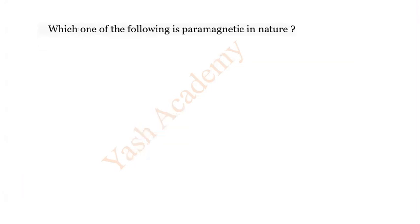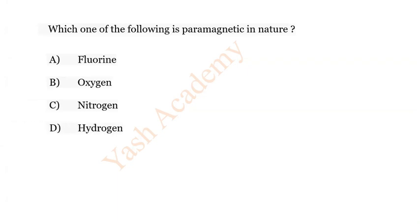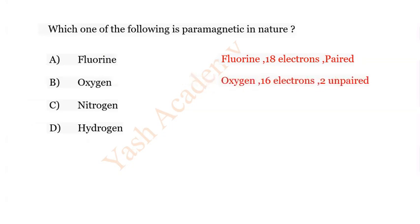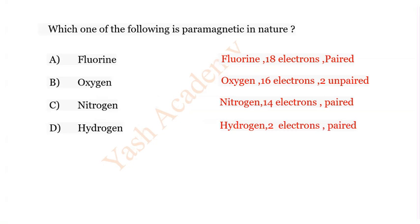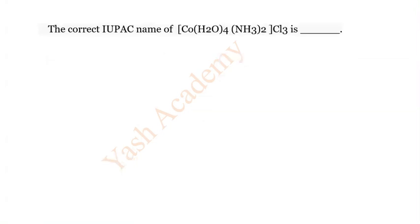Question 4: Which one of the following is paramagnetic in nature? A) Fluorine, B) Oxygen, C) Nitrogen, D) Hydrogen. Fluorine has 18 electrons — all paired. Oxygen has 16 electrons with two unpaired electrons. Nitrogen and hydrogen have paired electrons. The correct answer is B) Oxygen.